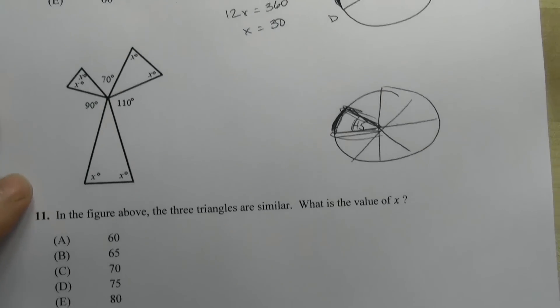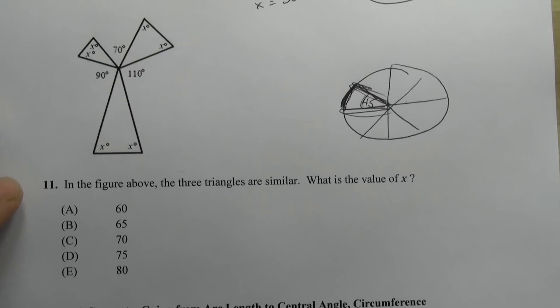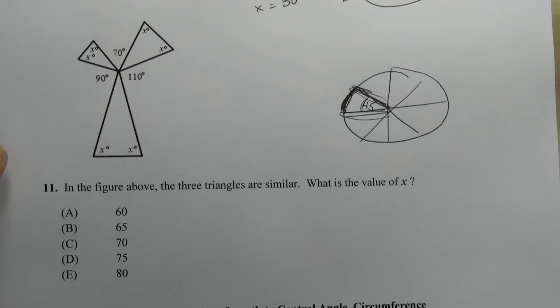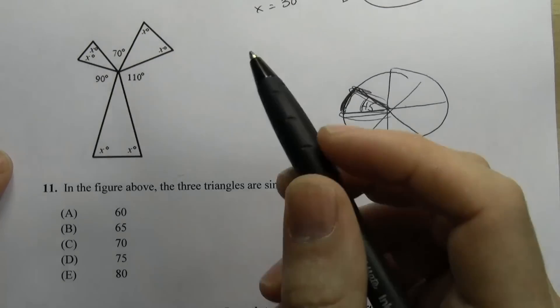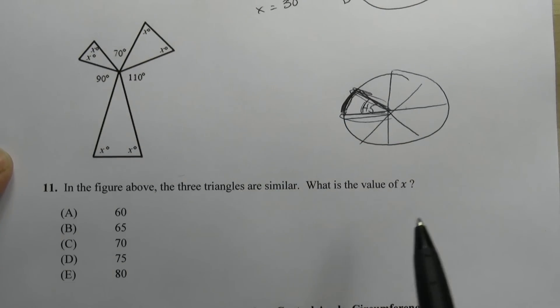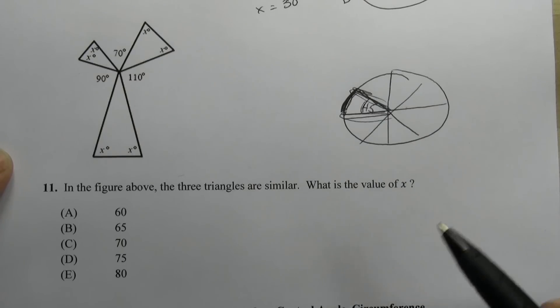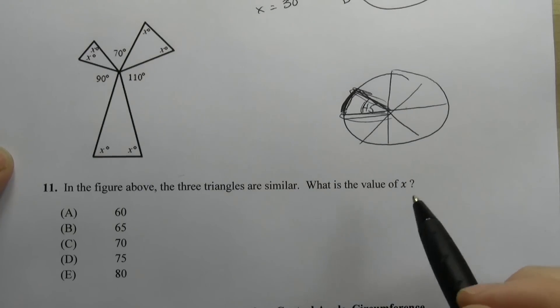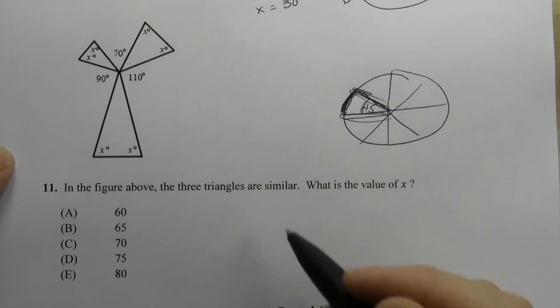The next thing we're going to do is try using this concept when there is no circle. So in this case, we see this triangle. It says in the figure above three triangles are similar, which means that the angles are all the same and not the length of the sides. And they want to know the value of X.